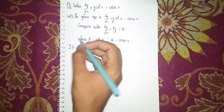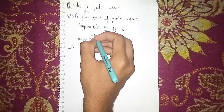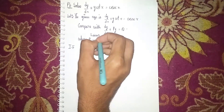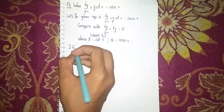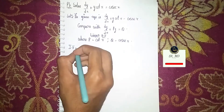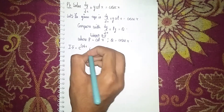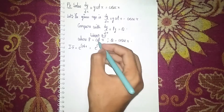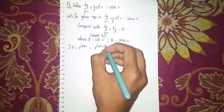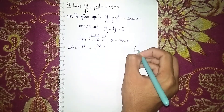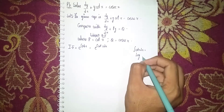So P is equal to cot(x) and Q is equal to cosec(x). Now we have to find the integrating factor. We are using the linear differential equation method. The integrating factor is equal to e to the power of the integral of P dx, which is e to the power of the integral of cot(x) dx.